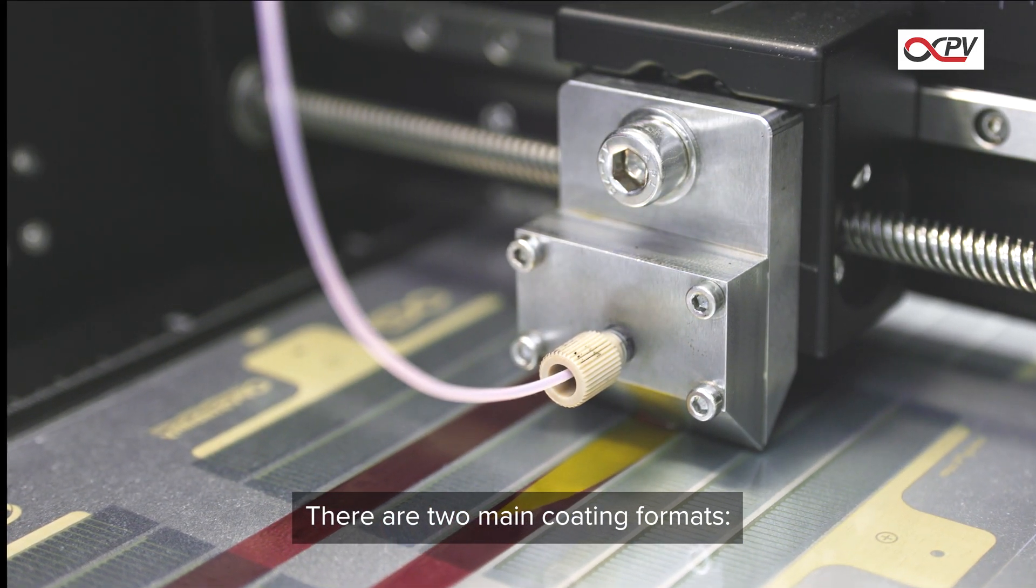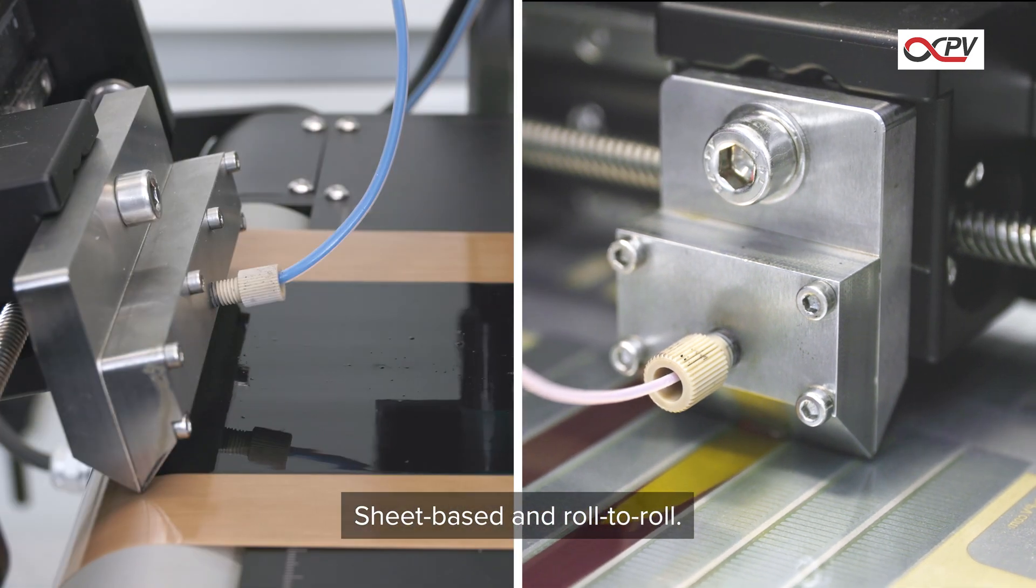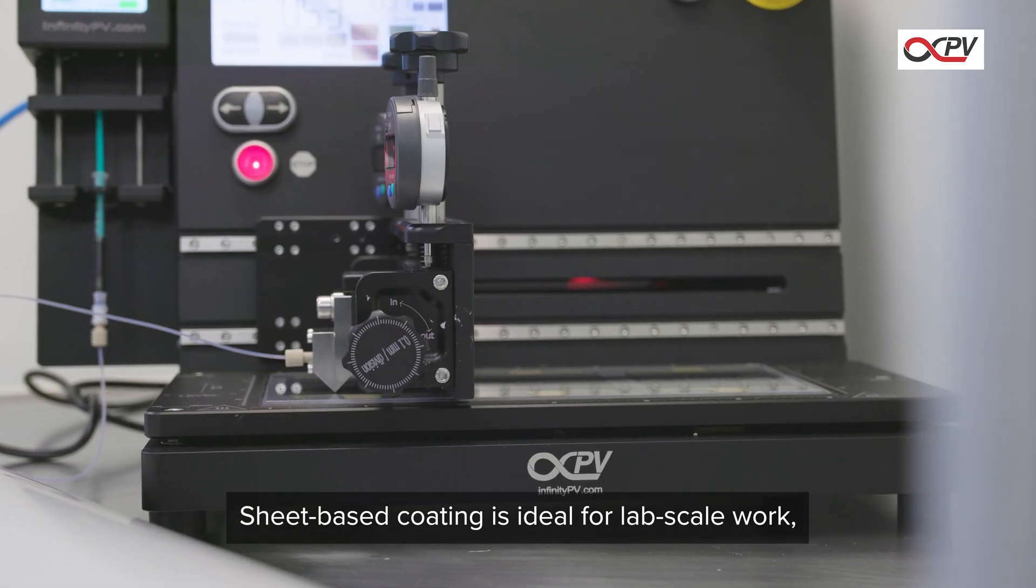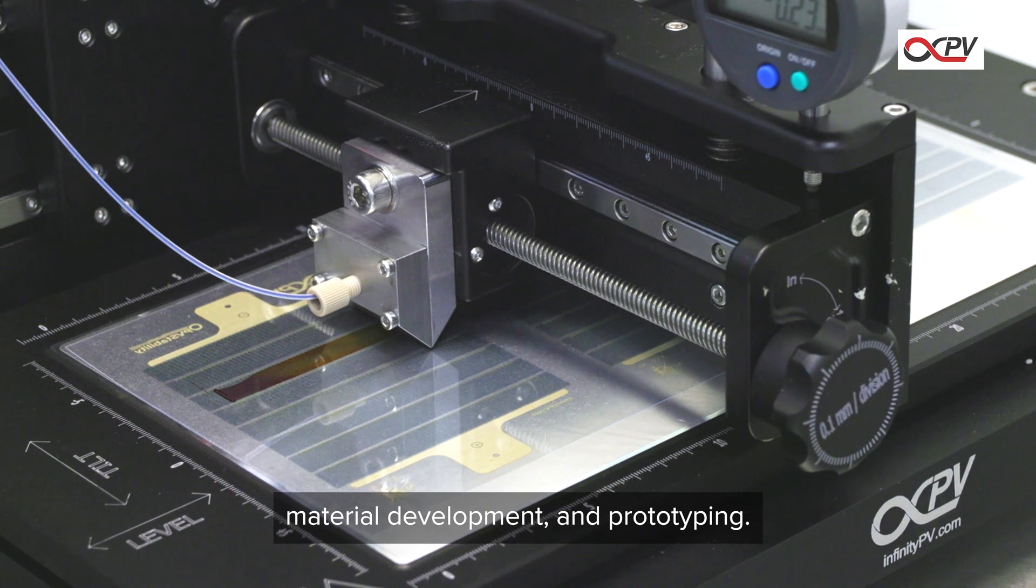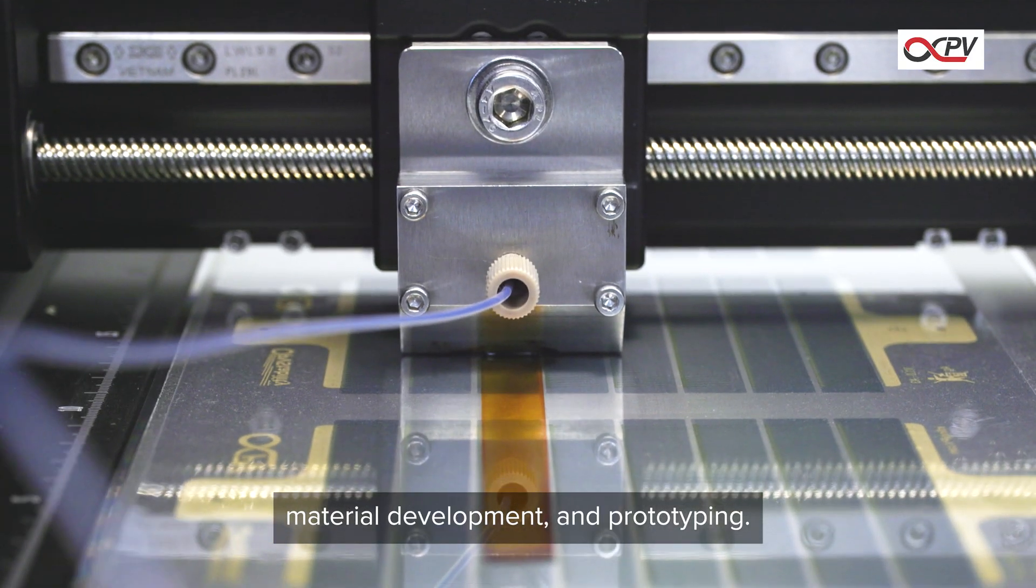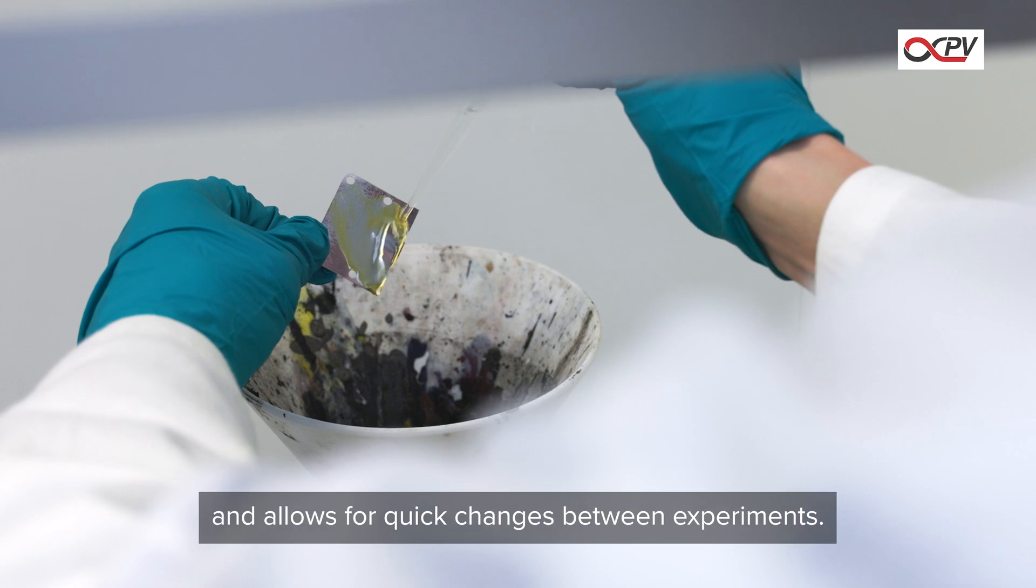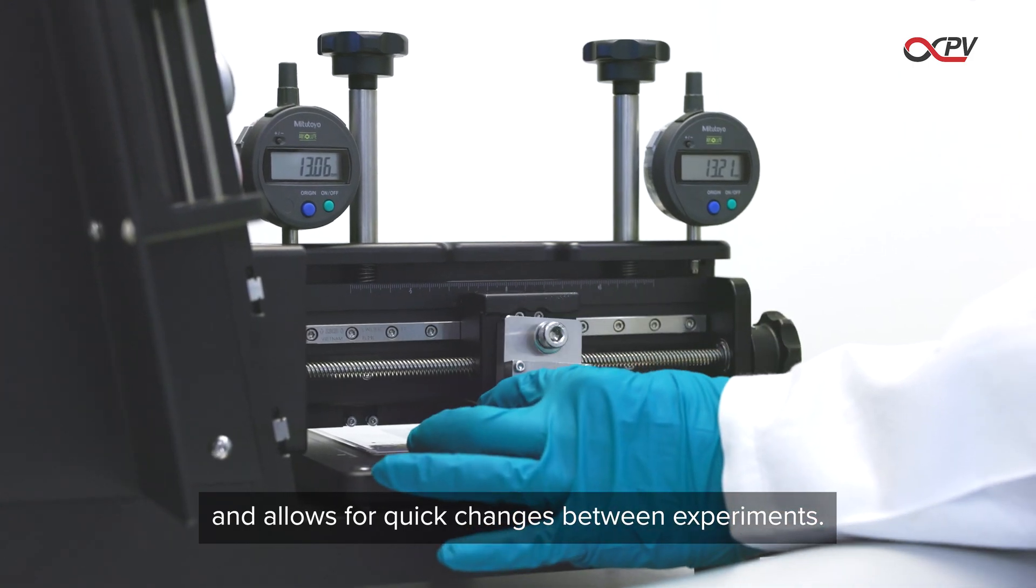There are two main coating formats: sheet-based and roll-to-roll. Sheet-based coating is ideal for lab-scale work, material development, and quick prototyping. It supports both flexible and rigid substrates and allows fast transitions between experiments.